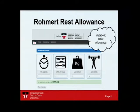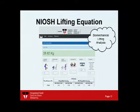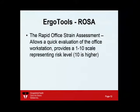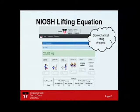The Rohmert Rest Allowance determines if, based on the demands of your cycle, you have enough rest time. We're currently working on a new fatigue prediction module to integrate into ErgoTools, ready by the end of summer. The NIOSH Lifting Equation tells you the acceptable weight limit for a lift, and it turns colors based on whether something is acceptable or not.